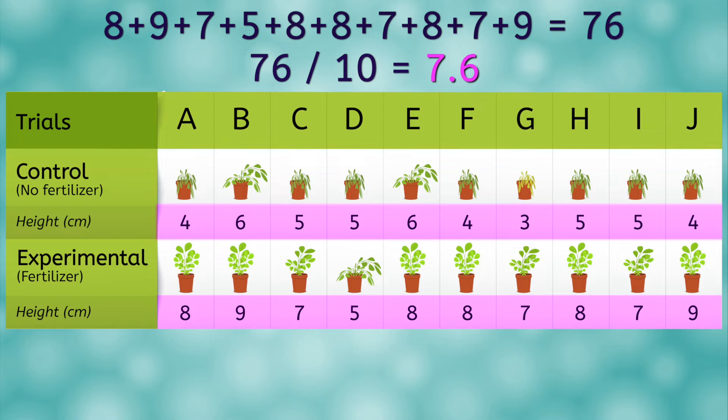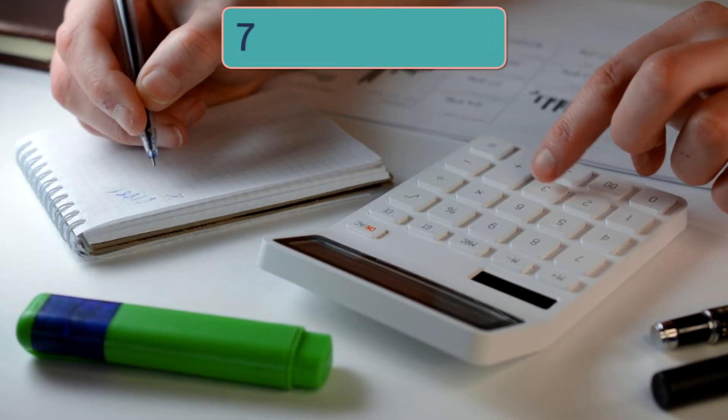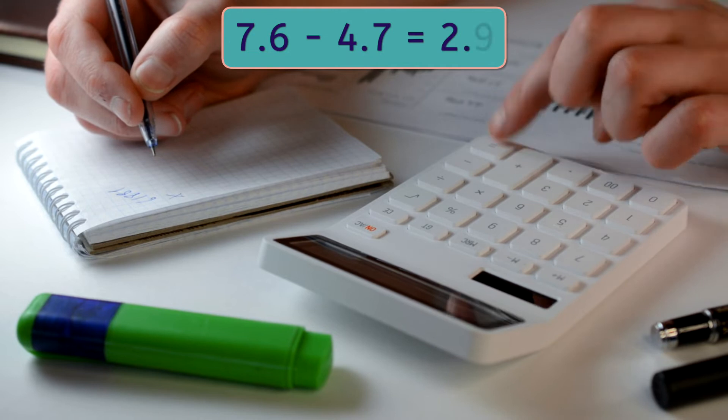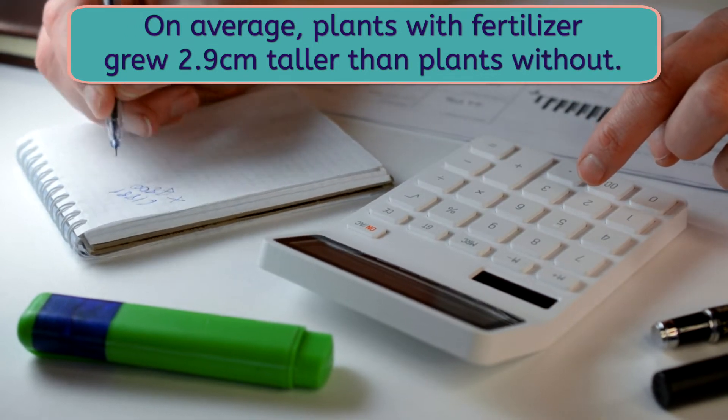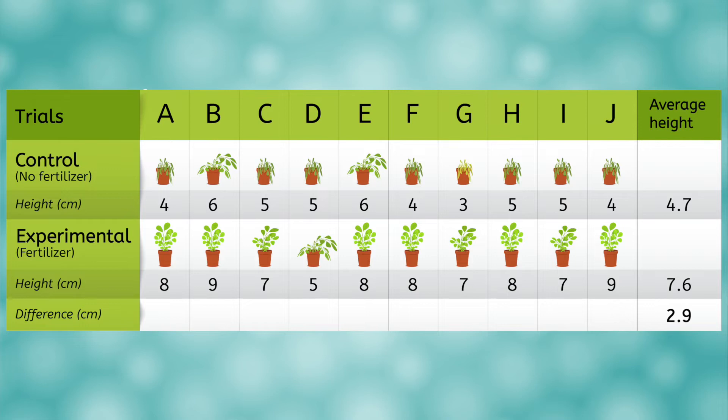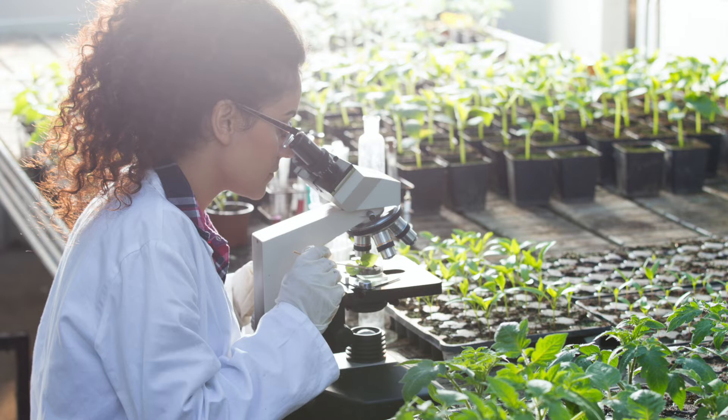So our experimental group definitely grew taller. But by how much? Another useful calculation is to show the difference between your two averages, which just means we subtract. 7.6 minus 4.7 equals 2.9. So on average, our plants that received the new fertilizer grew 2.9 centimeters taller than the plants that did not. It's a good idea to add some rows and columns to our data table to show both the average and difference that we calculated. Notice that this doesn't mean every plant in the experimental group was exactly 2.9 centimeters taller than the plants in the control group. In fact, there were even two plants in the control group that were taller than the shortest plant in the experimental group. That's why we need to calculate an average and not focus on individual plants.